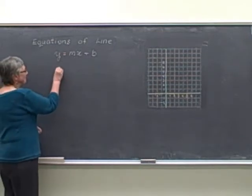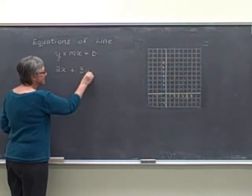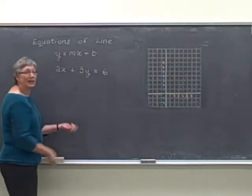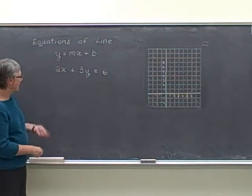For example, the equation 2x plus 3y equals 6 is also a linear equation in two variables. We've got our x and y.